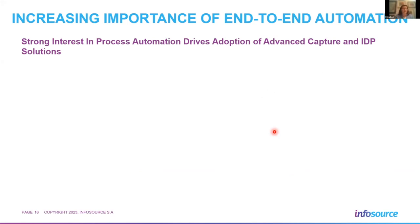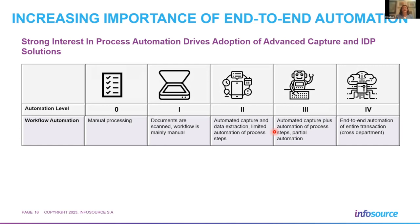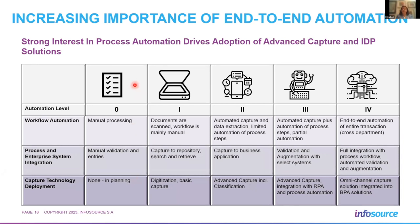To give a vision of where capture and IDP are going in the next couple of years, Petra presents four automation levels — from simple document scanning and digitization only, all the way to end-to-end automation of an entire business transaction across departments. We assume at least a third of processes with automation opportunity still lie in phase zero, still in planning that hasn't really been initiated.